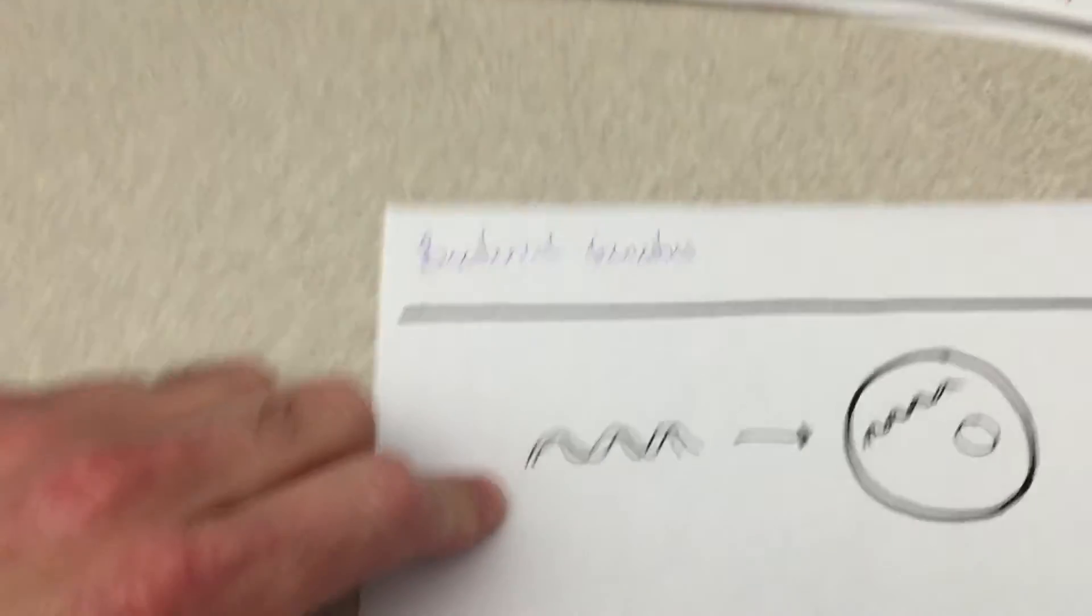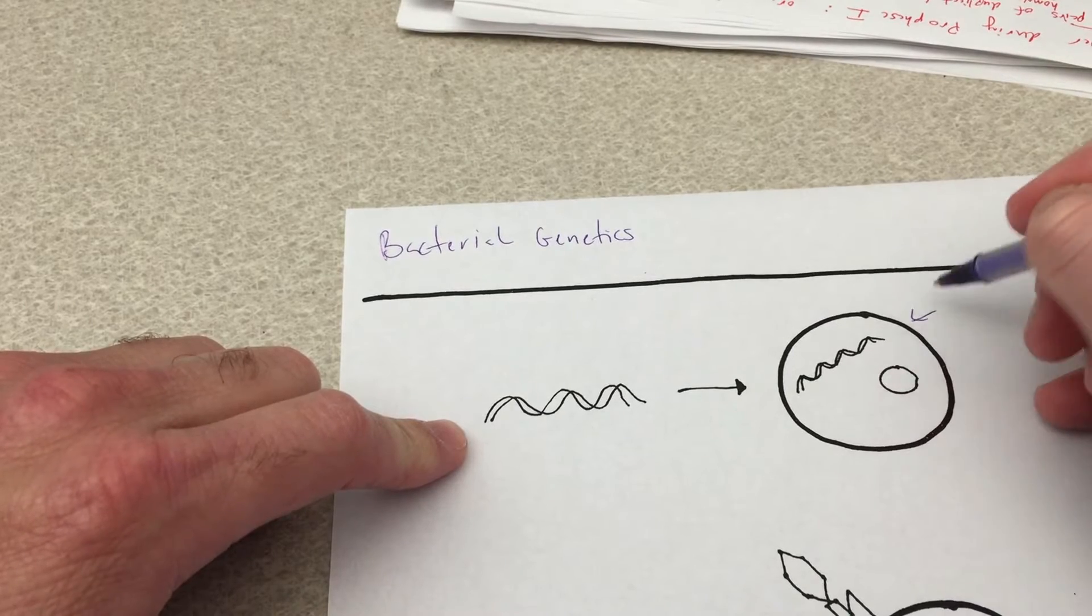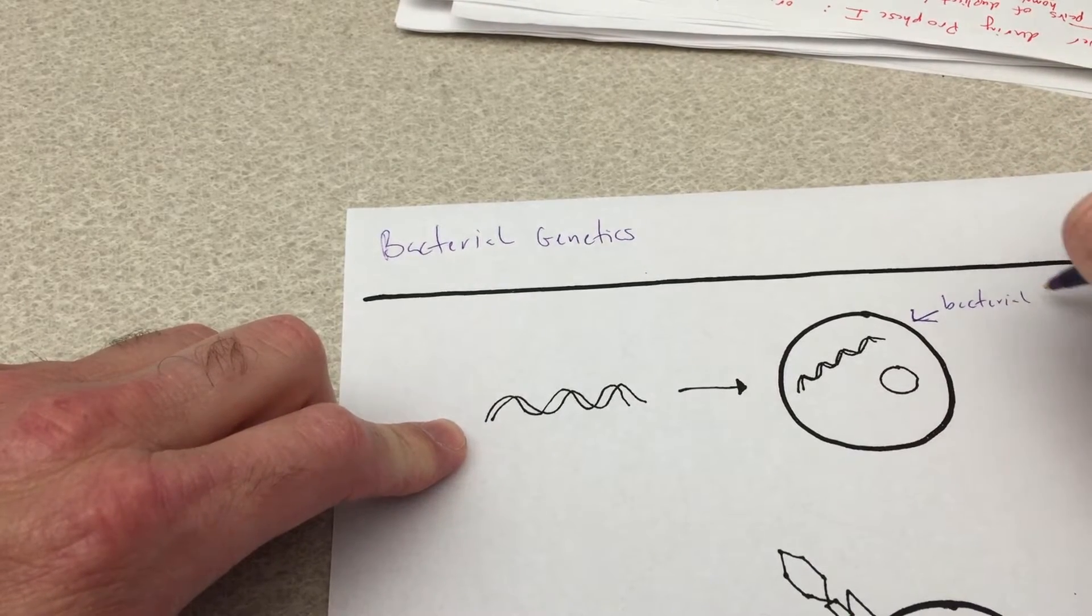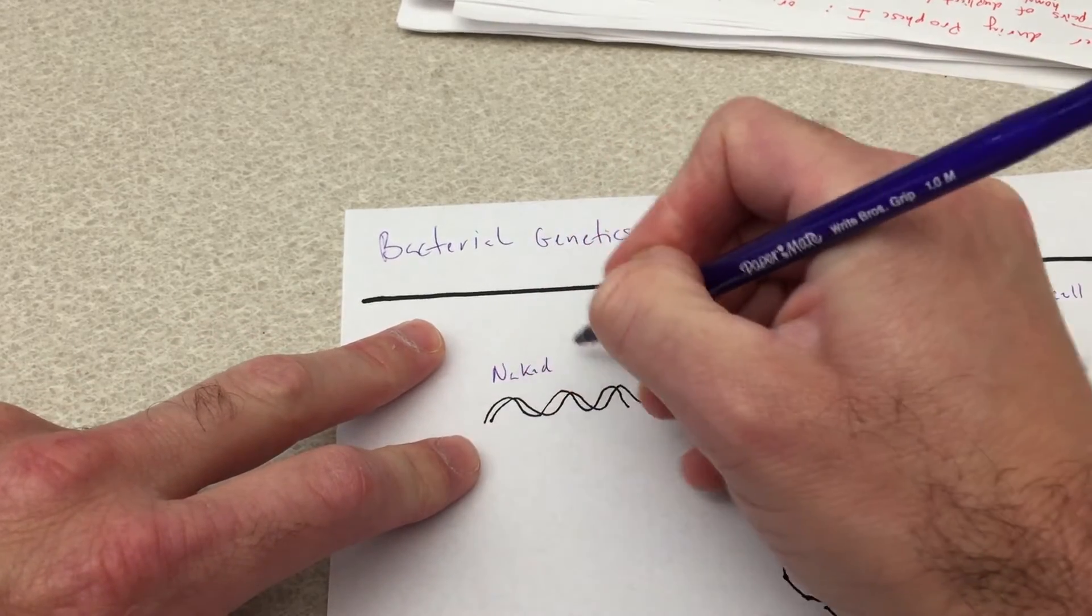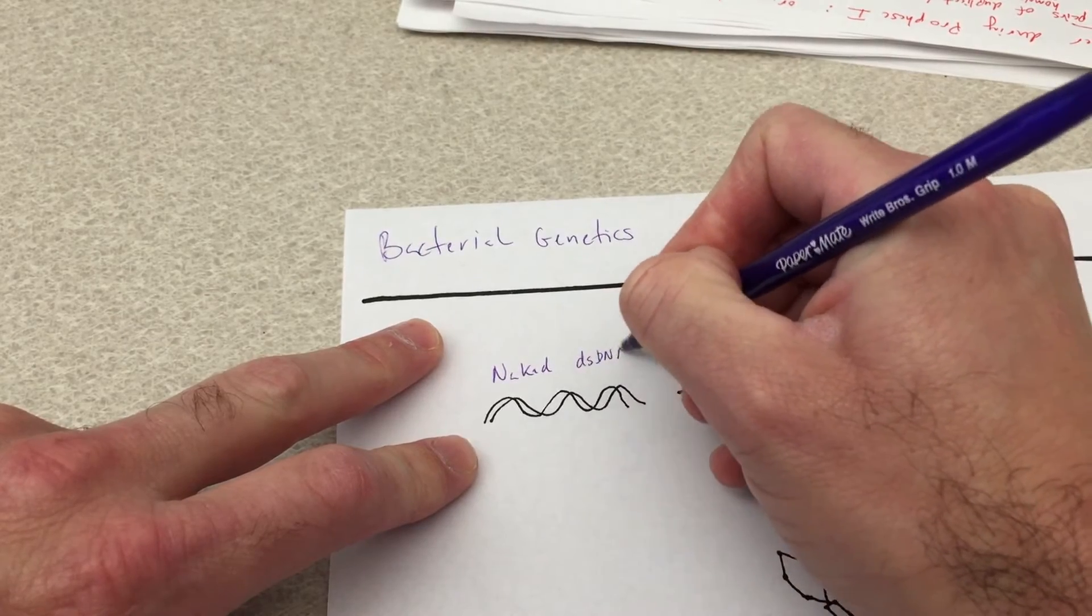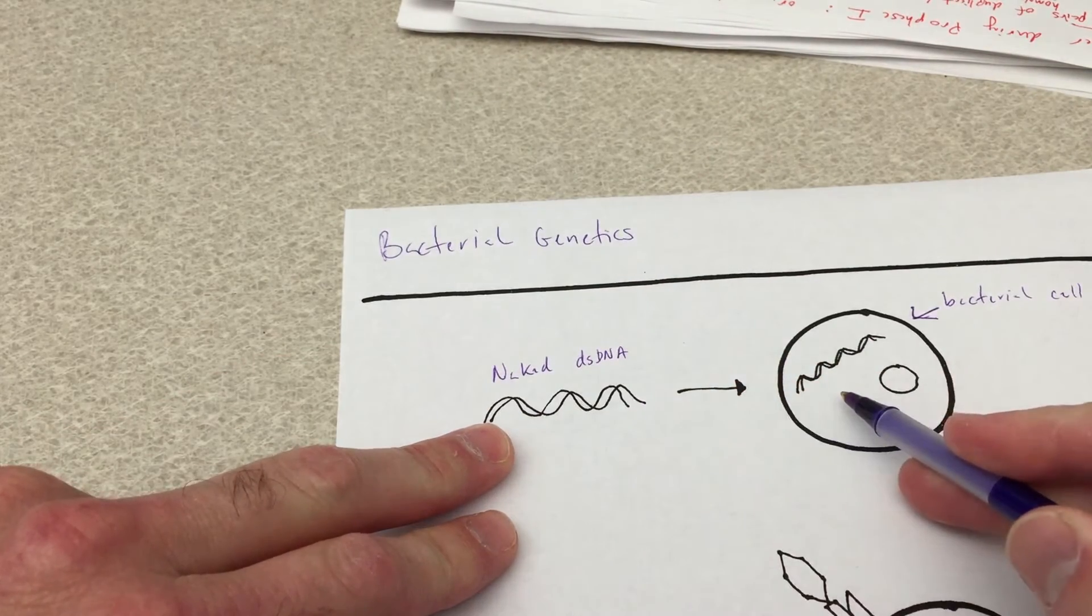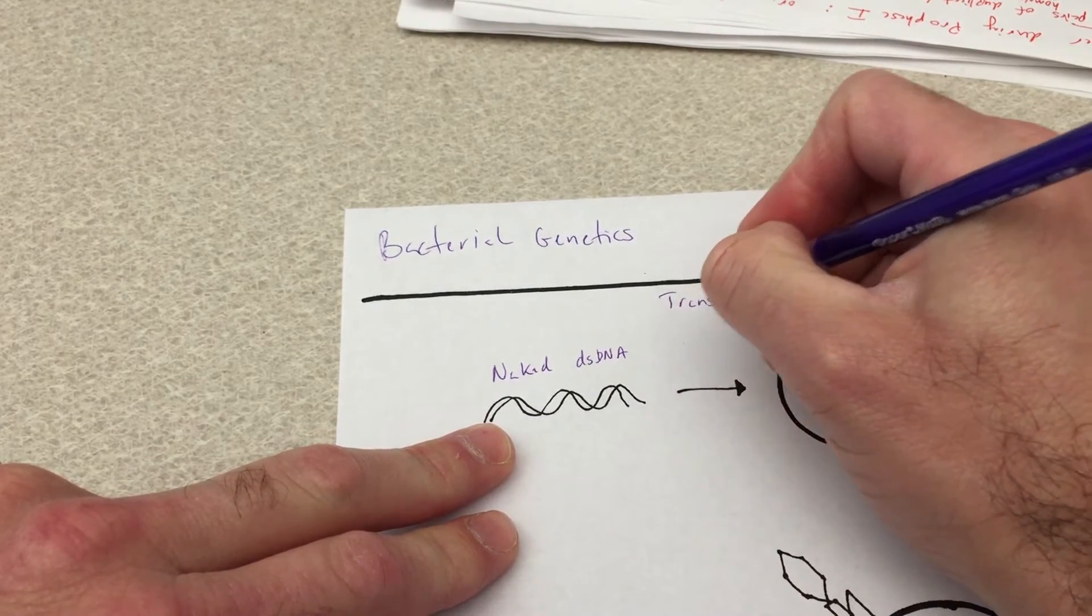Alright, so here is our first method, and here of course is our bacterial cell. And here is a piece of naked, double-stranded DNA. Double-stranded DNA can enter the bacterial cell, and this process is known as transformation.